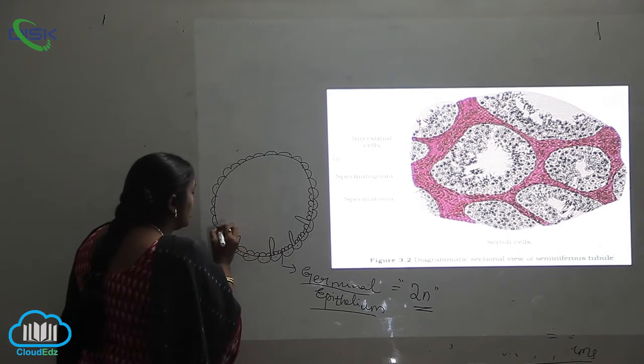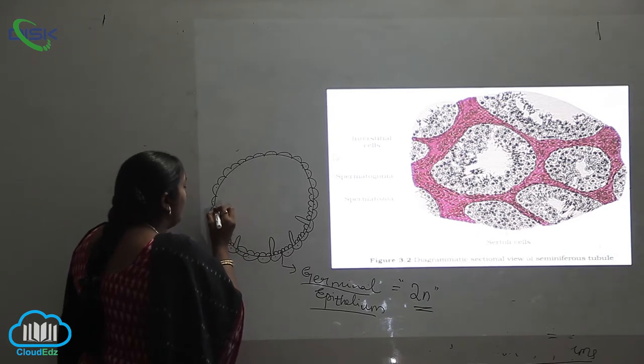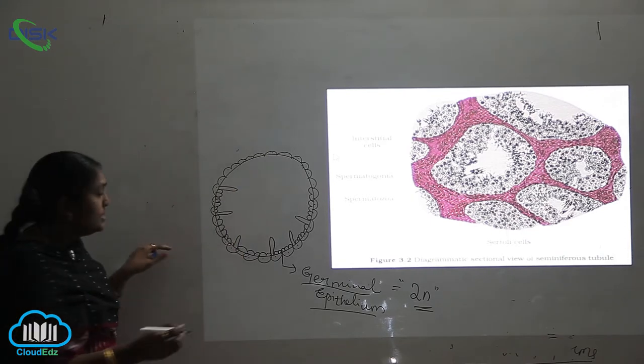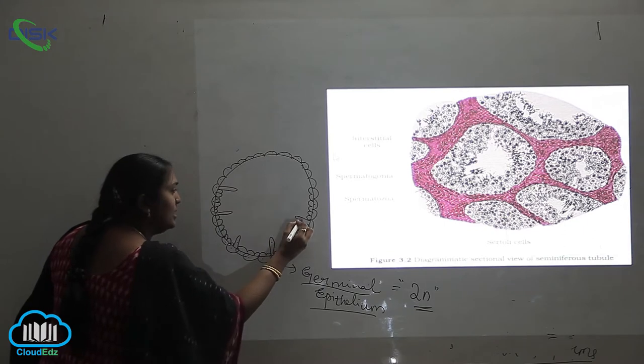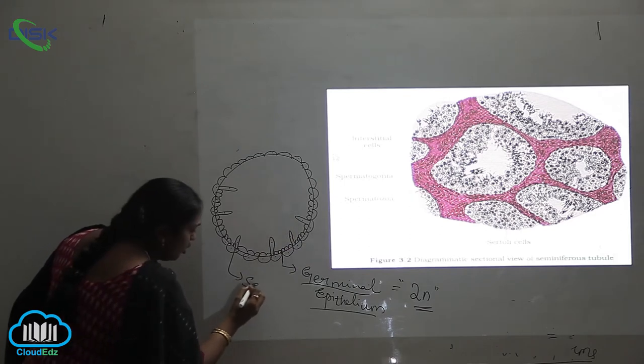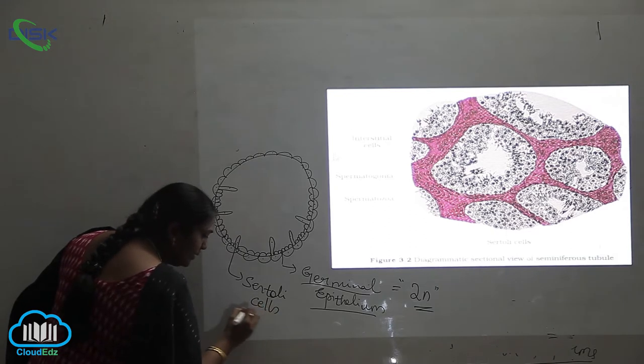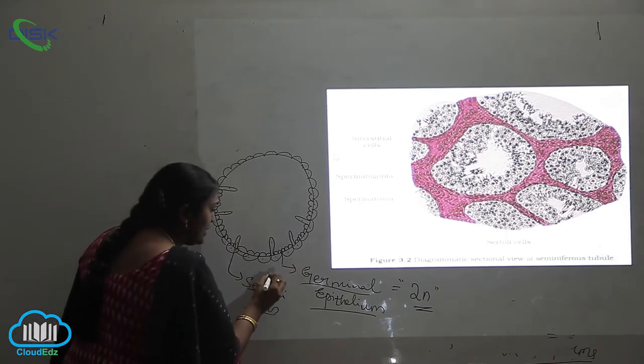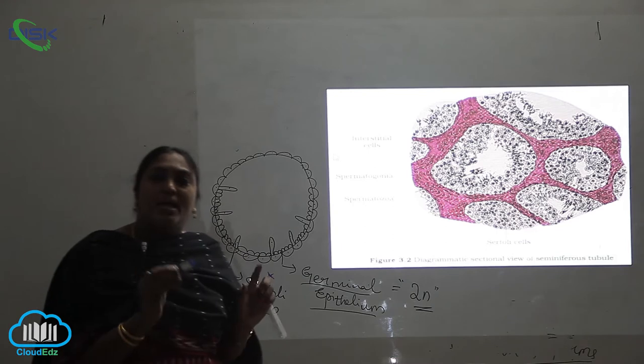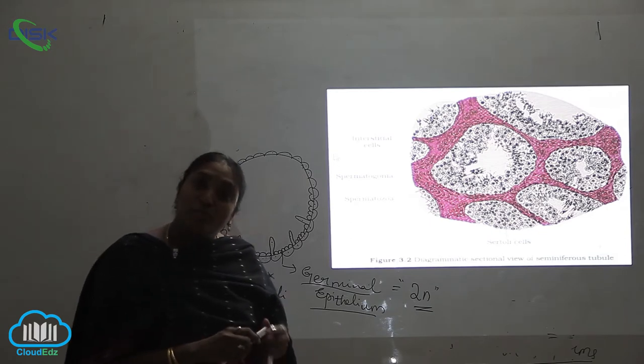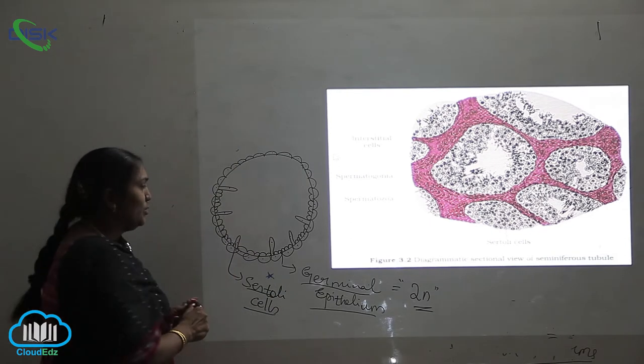Now, what is this cell which is elongated and longitudinal in shape? Any guesses? It is called as, even it will have the nucleus, it is nothing but the Sertoli cells. You can see there, they are called as the Sertoli cells, very very important. What are Sertoli cells? The Sertoli cells are nothing but where the major production of the sperms during the process of spermatogenesis is occurring only in the Sertoli cells.